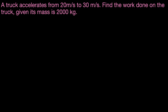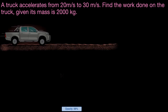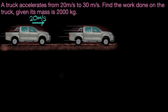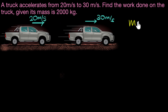Let's go ahead and draw a situation for this. The truck accelerates from 20 to 30, so here is our truck before accelerating — it's going at 20 meters per second. After accelerating, it goes a little faster, now at 30 meters per second. The mass of this truck is given as 2000 kilograms.